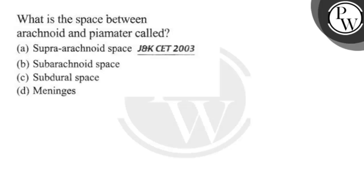Hello Bacho, let's read the question. What is the space between arachnoid and pia mater called? Option A: supraarachnoid space. Option B: subarachnoid space. Option C: subdural space. Option D: meninges.